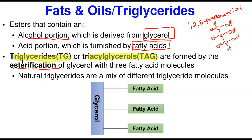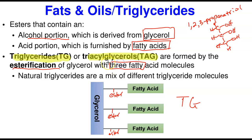Natural triglycerides are a mix of different triglyceride molecules. The fatty acids can be saturated, less saturated, or more saturated — it's a mix. In a typical triglyceride structure, there are three ester bonds, which is why we use the term triester. The triacylglycerol or triglyceride name reflects that three fatty acids are esterified onto the glycerol backbone. You need to esterify three fatty acids for it to form a triglyceride or a fat and oil.